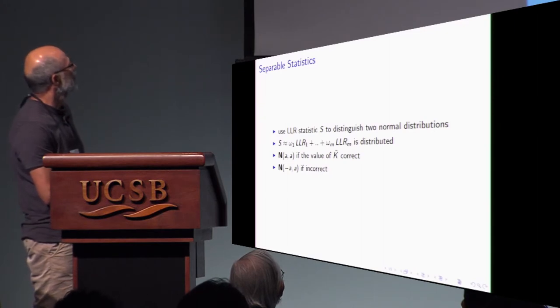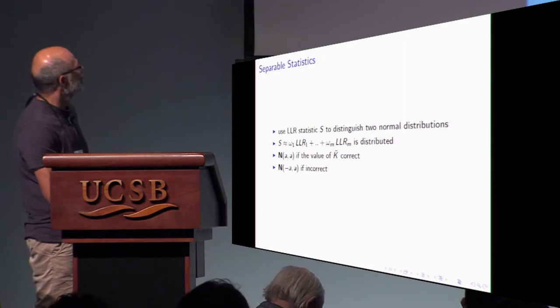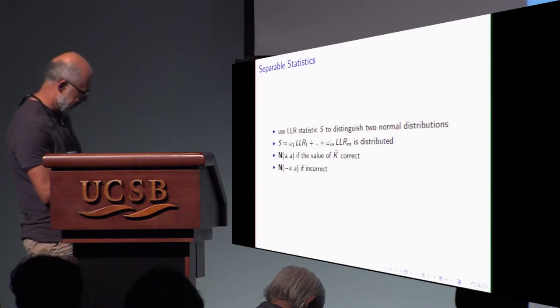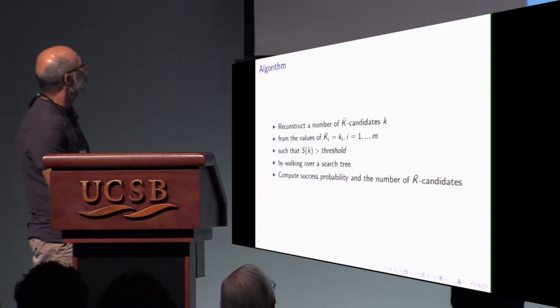Now we need to distinguish between two normal distributions. And we use LLR statistic. Fortunately, this LLR statistic is a linear combination of LLR statistic for projections with some weights which are computed explicitly. And we know distribution of this statistic. Distributed this way as a normal distribution if the value is correct. And if the value is not correct, it's distributed this way.